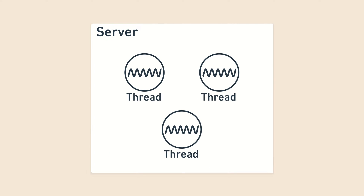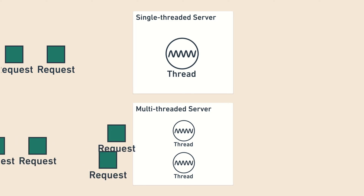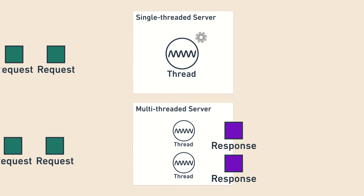A thread can be thought of as a single worker that does work. A single-threaded server has one worker handling requests, while a multi-threaded server might have multiple ones handling requests at the same time.